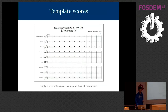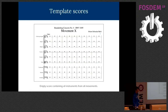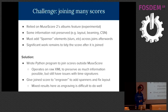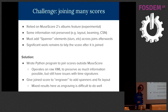We also helped by producing a template score — adding all the instruments to a MuseScore file set up and ready to go so transcribers could just start adding notes. The template had to contain all instruments from all movements, which was important when joining them later. We were relying on a MuseScore 2 experimental Albums feature for joining, but it had various issues. Eventually I wrote a separate Python program to join scores outside of MuseScore, preserving as much information as possible so that transcribers' work wouldn't be lost.